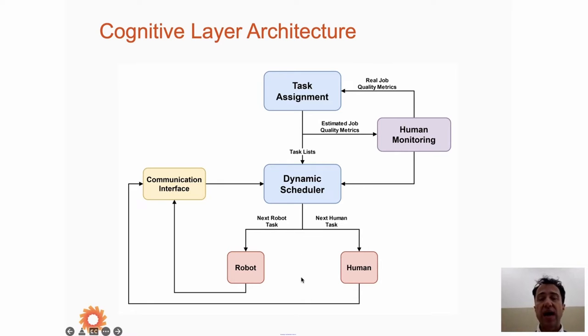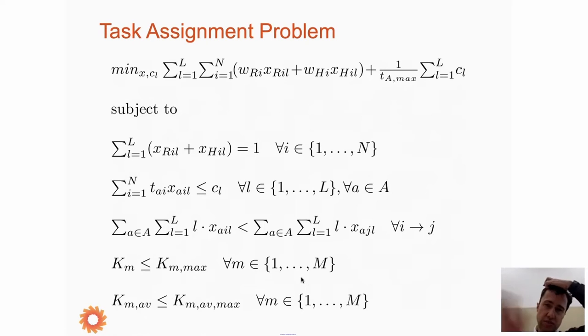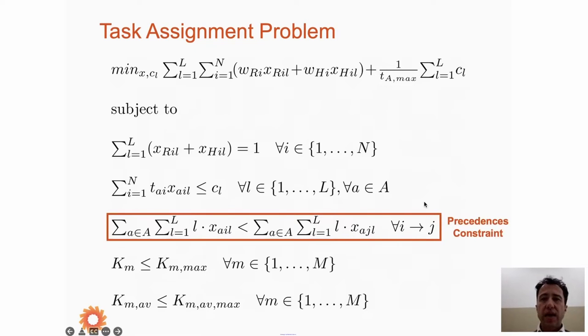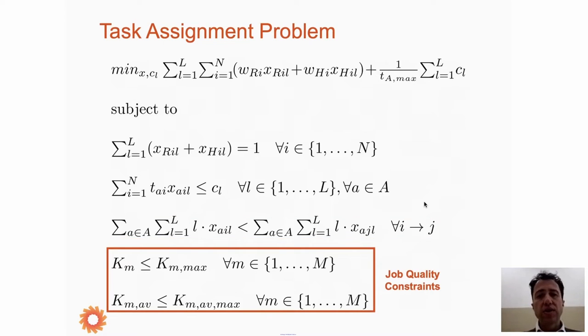The dynamic scheduler dynamically changes the order of the tasks and can even assign one of the tasks nominally assigned to the robot back to the human or a task assigned to the human to the robot based on what is really happening in the scene. The output of the scheduler is a sequence of tasks to be sent to the human and to the robot, and the sequence is dynamic. This is to give you an idea on how we solve the task assignment problem. It's an optimization problem because we want to optimize.